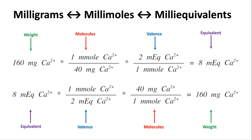Different molecules can have different valences and therefore different amounts of chemical activity. The unit of chemical activity is milliequivalents. To convert from millimoles to milliequivalents, we apply the valence factor. Since calcium has a charge of +2, there are 2 milliequivalents for every 1 millimole. For every one calcium molecule, you get two charges. Millimoles cancel, leaving us with 8 milliequivalents of calcium.